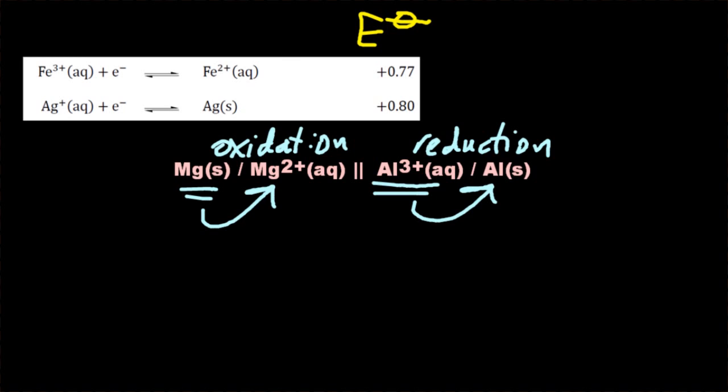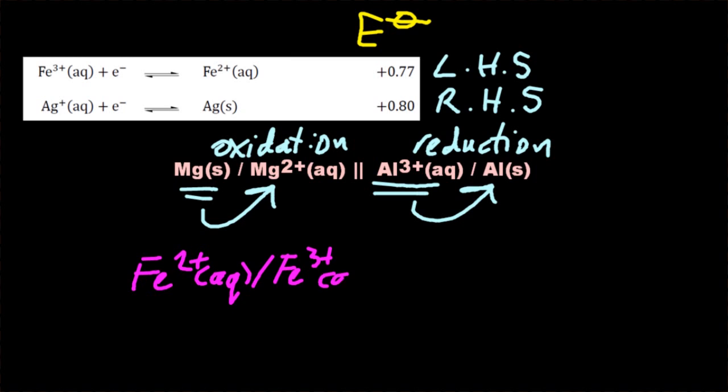And the aluminium three plus turns to aluminium, and that is indeed reduction - gain of electrons. So using that as a template, let me write out the one for the iron ions and silver. So I'm showing iron two plus to three plus - that's oxidation, loss of electrons - and silver plus to silver, that's reduction.